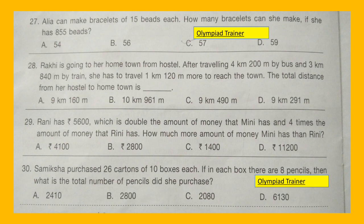Question 30: Samiksha purchased 26 cartons of 10 boxes each. If in each box there are 8 pencils, then what is the total number of pencils she purchased?